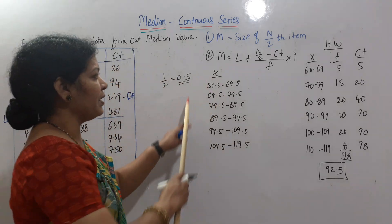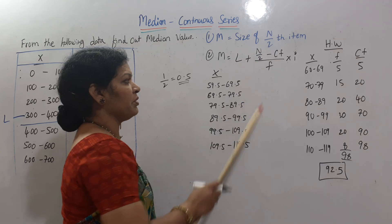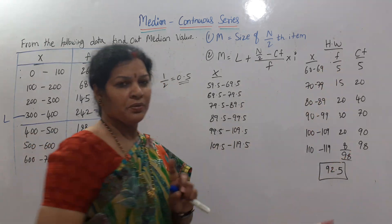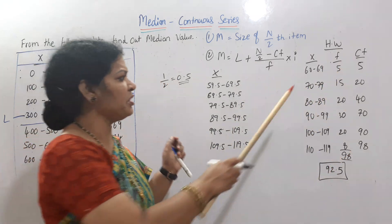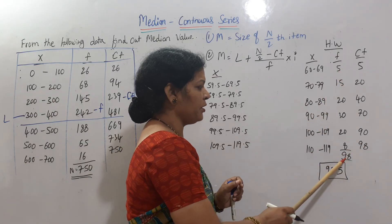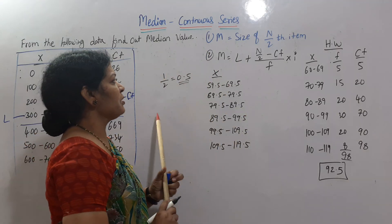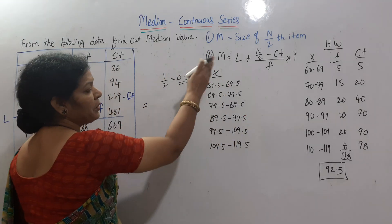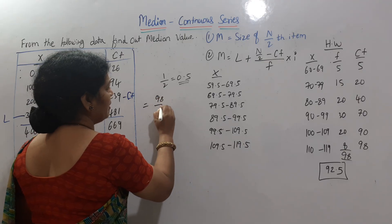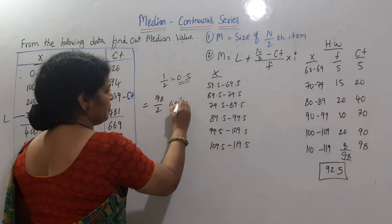So how do you write this? Write the data with clarity. We have our frequency. Now we have a problem here. N is 98. So the first step is the size of N/2 th item. N/2 is 49. So the 49th item is what we are looking for.